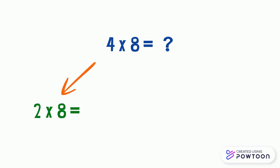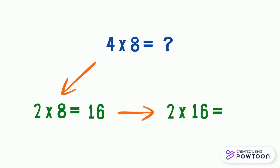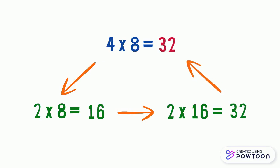The double of 8 is 16. So 2 times 8 equals 16. Then we multiply the number 16 by 2, which means we should find the double of 16. The double of 16 is 32. So 2 times 16 equals 32. Therefore, 4 times 8 equals 32.